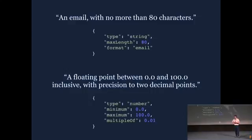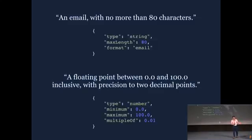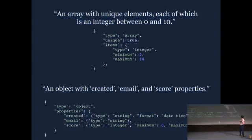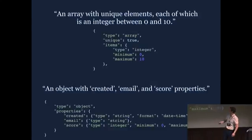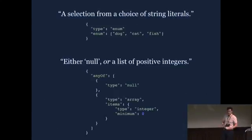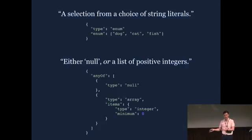JSON Schema is a really widely used format, very interoperable. It has nice properties like ensuring client-side validation is exactly the same as server-side validation. It allows you to use tooling to build HTML forms that correspond with the input — for example, if you have an enum, using a drop-down select for that enum or some other appropriate HTML control. You can build up composite types with it as well. It's quite expressive, really widely used — a great interoperable way of describing what your data structures look like.